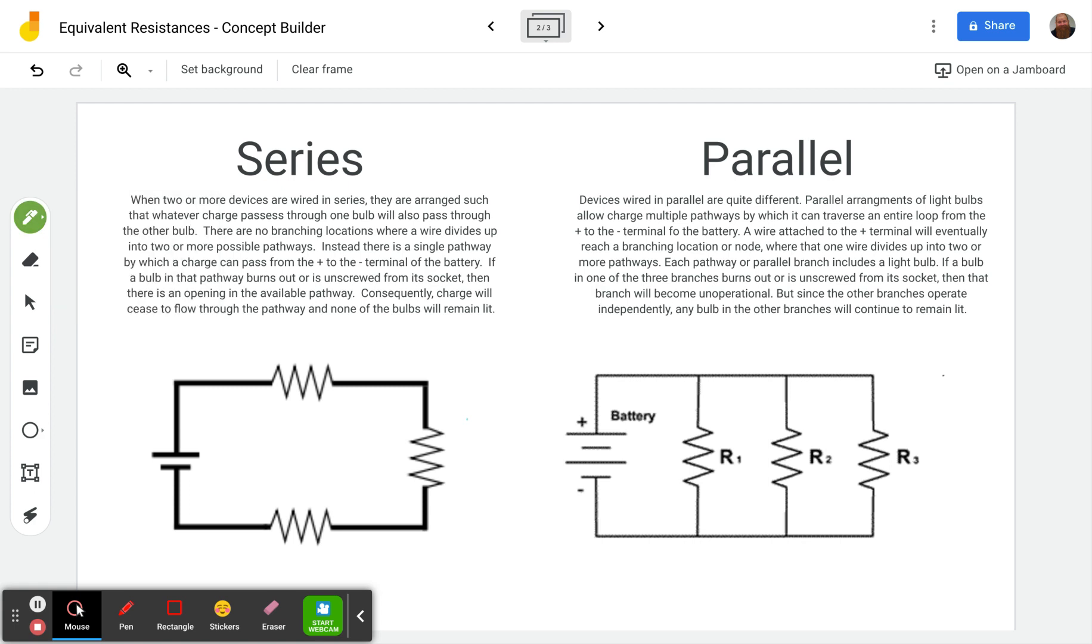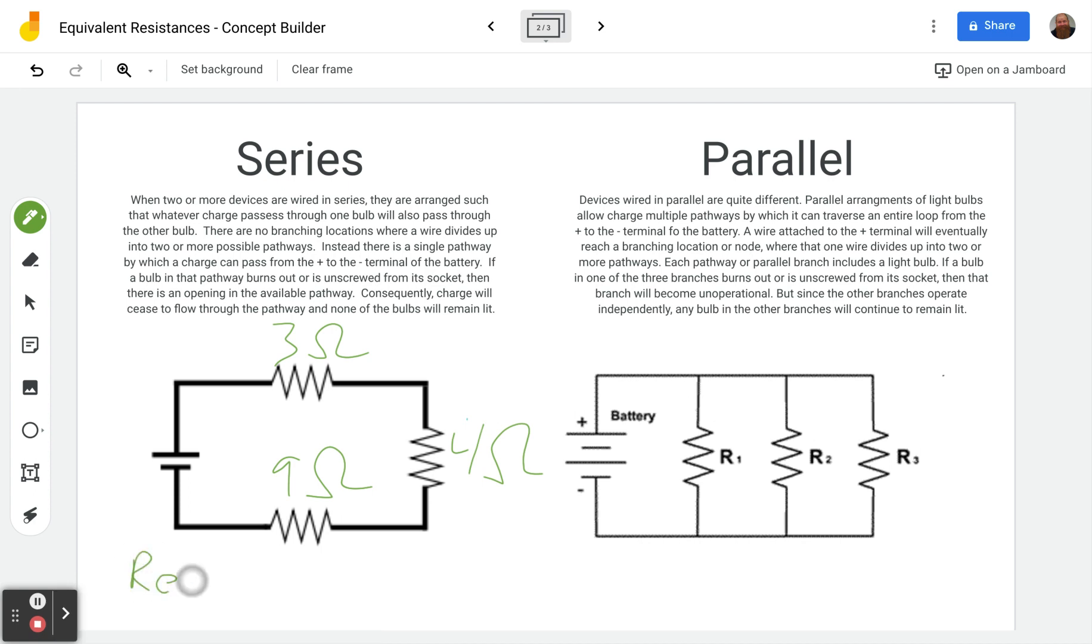Now let's do green. So if this was 3 ohms and this was 4 ohms and this was 9 ohms, you would just do the equivalent resistance equals 3 ohms plus 4 ohms plus 9 ohms. 3 plus 4 is 7. 7 plus 9 is 16. 16 ohms. And that's it. That's the equivalent resistance.